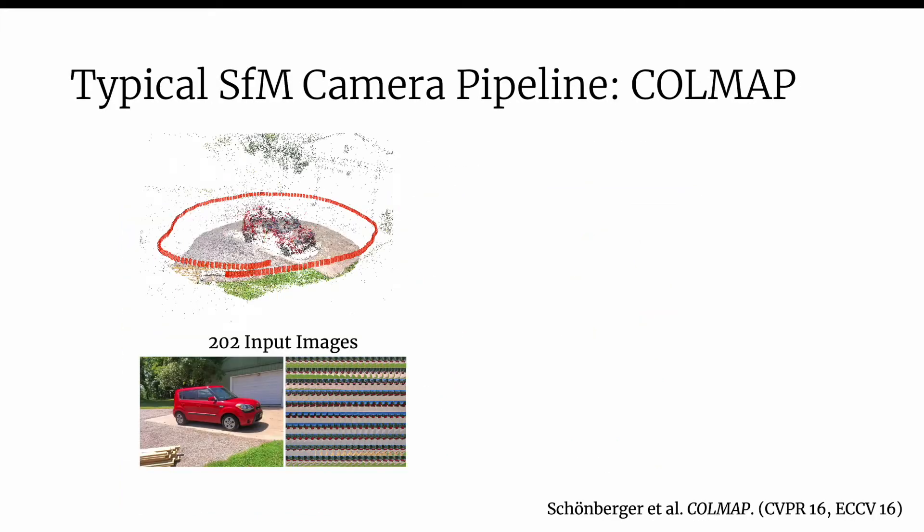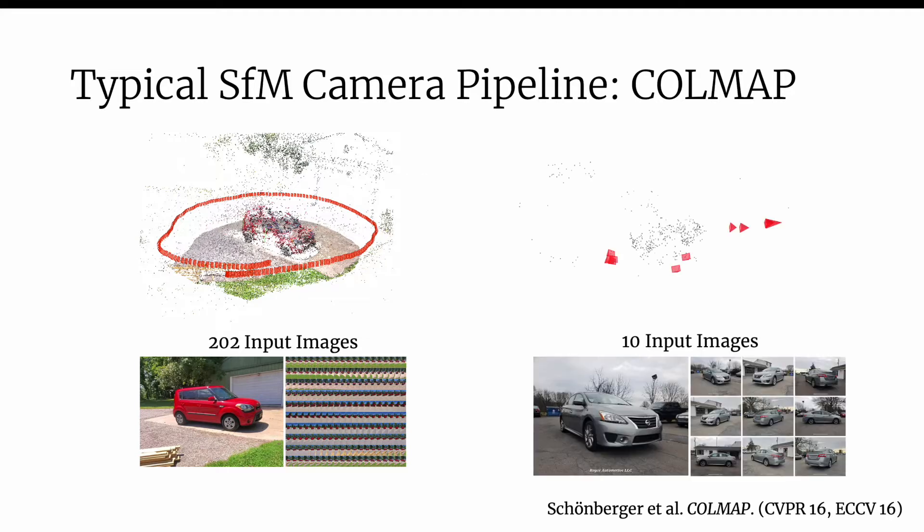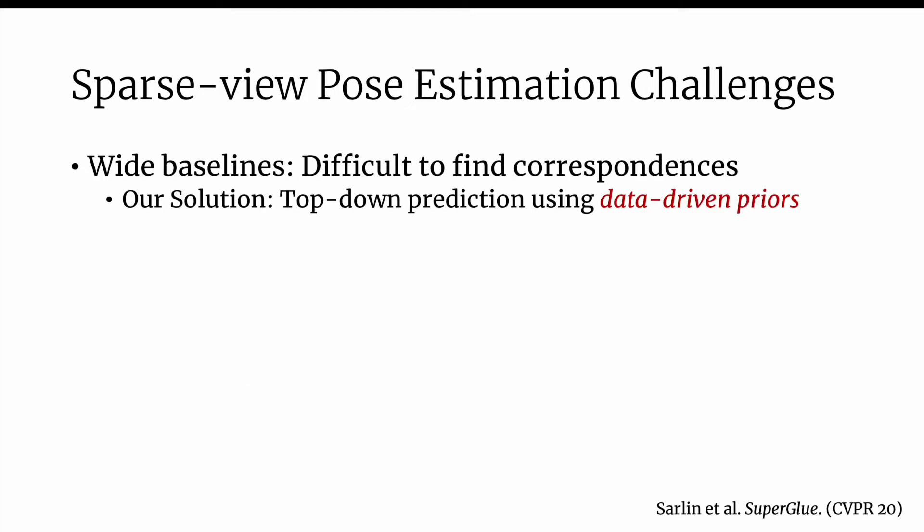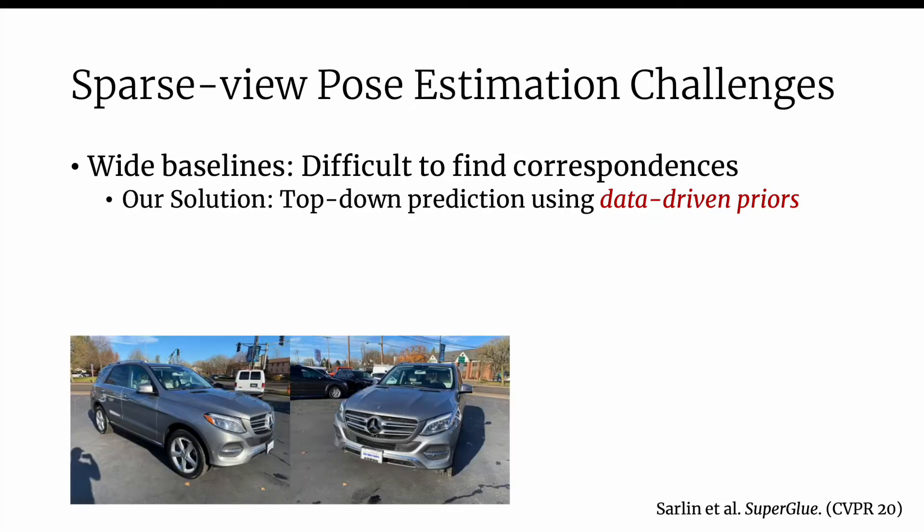A classical solution is to rely on correspondence-driven methods, for example COLMAP, but these methods do not work well given a small number of images. A main challenge is that wide baseline views often have insufficient overlap to compute useful correspondences. On these images of a car, even the state-of-the-art feature-matcher SuperGlue finds few inlier correspondences.